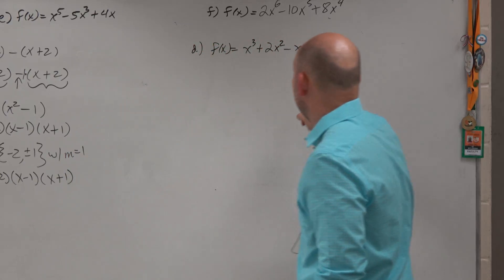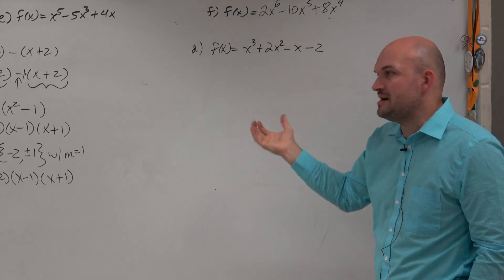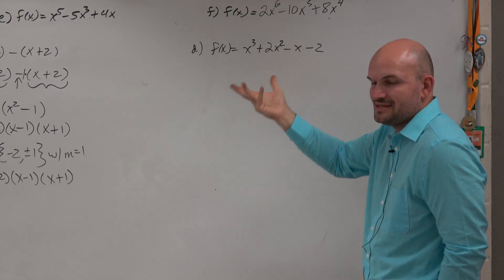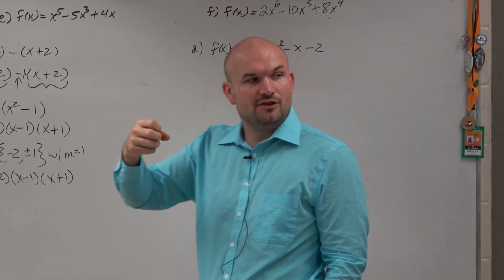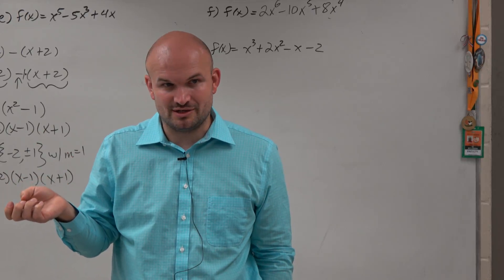The problem we have here is we have four terms. We can't use the same method. We can't say what two numbers multiply to give you negative 2, add to give you what? The same process doesn't work. So we need another technique. Does anybody remember the technique for factoring when we have four terms?